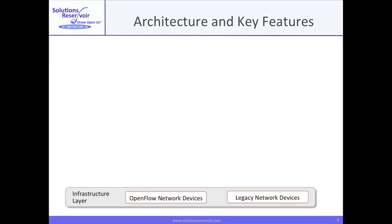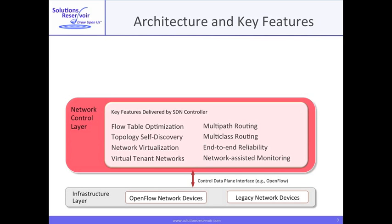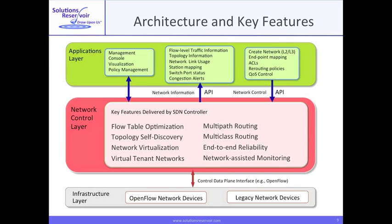Let's look at what we have architecturally by noting some features. The infrastructure layer is where we find our switches, OpenFlow-enabled or otherwise. Here are some of the features delivered by the SDN control layer, and here are some of the things that occur in the applications layer. You may wish to pause and read this.